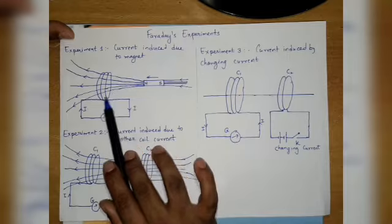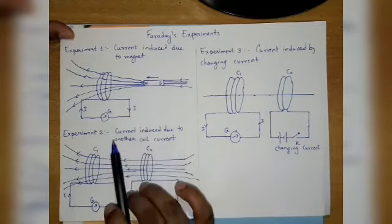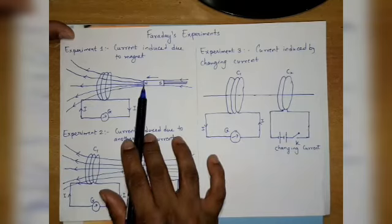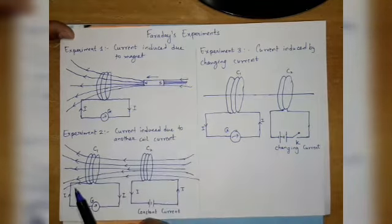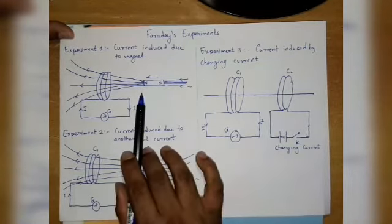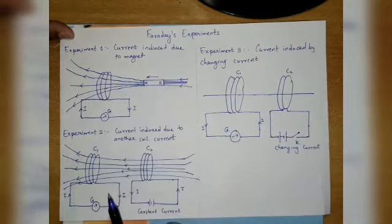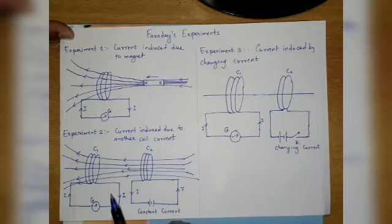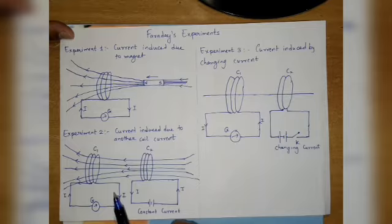The deflection we saw will be opposite when we take the north pole away from the coil. So in experiment 1, we learn that relative motion between the coil and the magnet is responsible for induction of electric current in the coil.